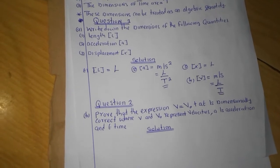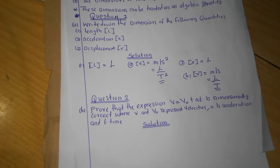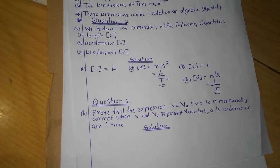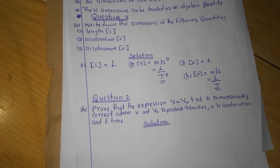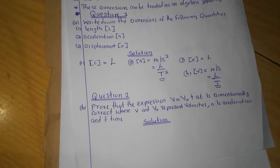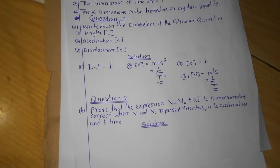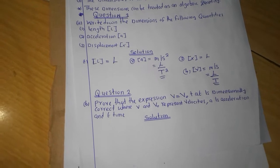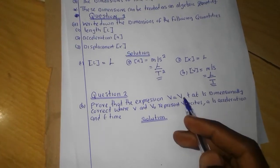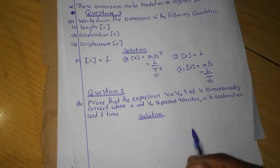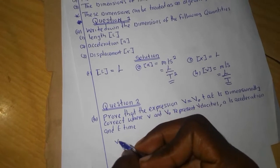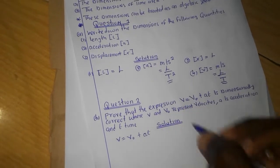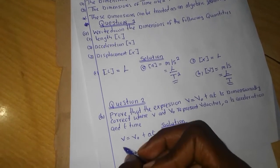We come to question 2, which says: prove that the expression V equals V-naught plus acceleration multiplied by time is dimensionally correct, where V and V-naught represent velocities, A is acceleration, and T is time. This question is simple — we just want to prove that this particular equation is dimensionally correct.